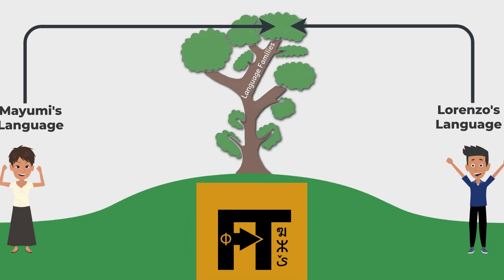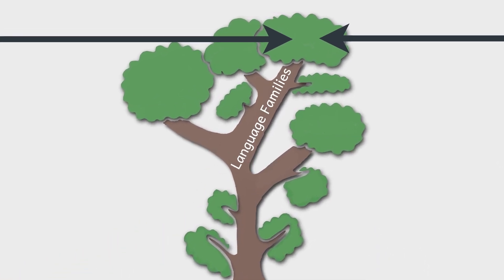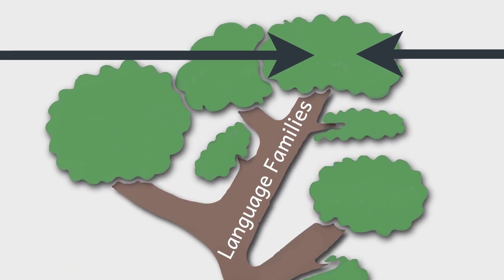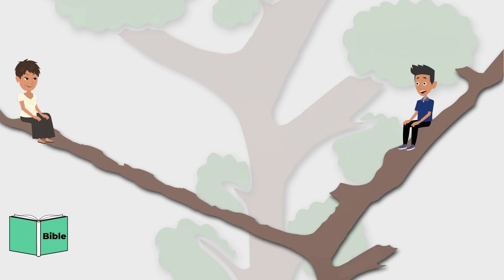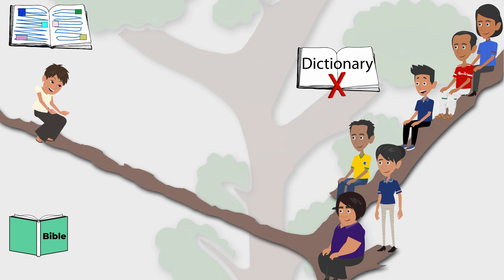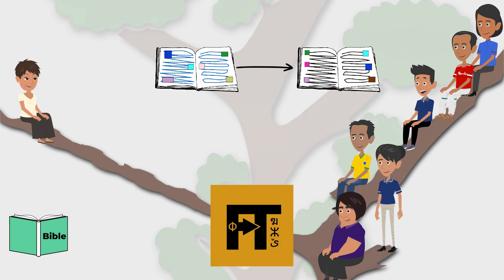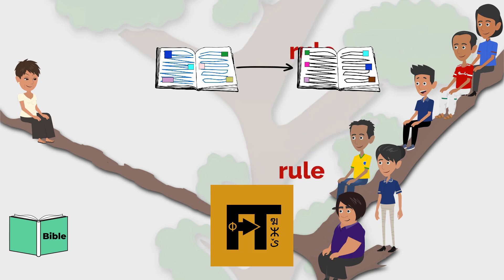Since Mayumi and Lorenzo's languages are related, FlexTrans can take advantage of that and produce quality drafts that Lorenzo and his team can revise and polish. To get started, Lorenzo and his colleagues must first make a dictionary in his language. Fortunately, Mayumi's community already has a dictionary in a digital format, which Lorenzo's team can use to jump-start their own dictionary. Then, with the help of a linguist who knows how both languages work, they craft linguistic rules that will transform Mayumi's language into Lorenzo's.